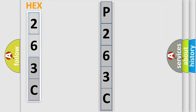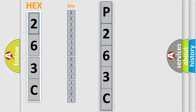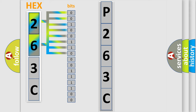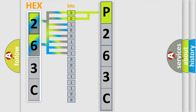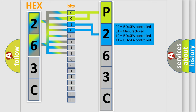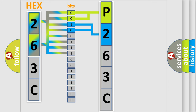The error code is split into two bytes consisting of 16 bits. One bit is the basic unit that each computer works with. The bit has two logical states: zero, low level, and one, high level. By combining the first two bits, the basic character of the error code is expressed. The next two bits determine the second character. The last bits of the first byte define the third character of the code.